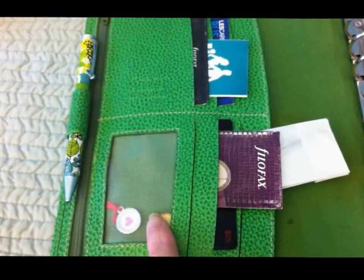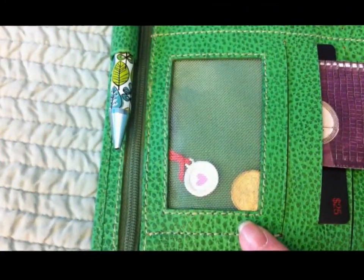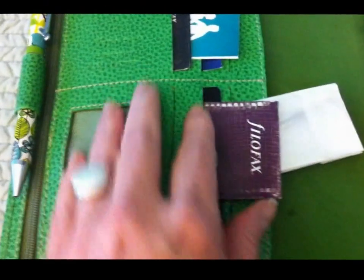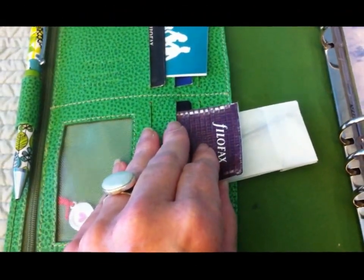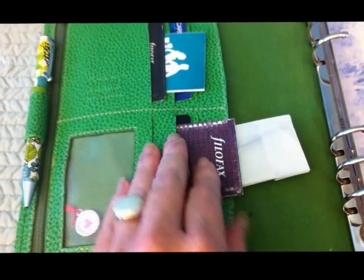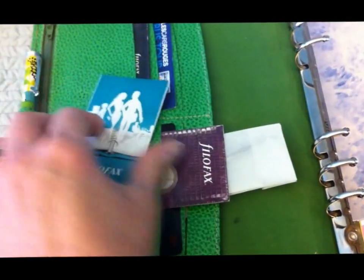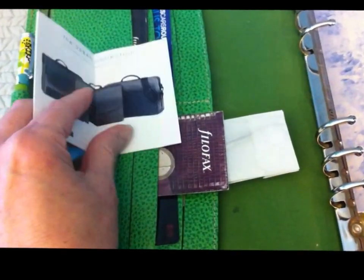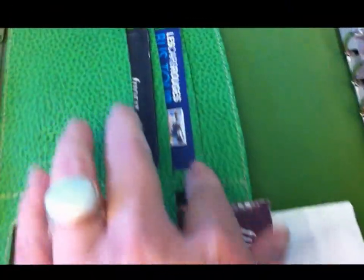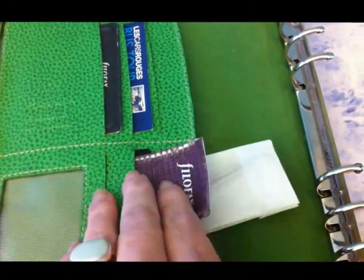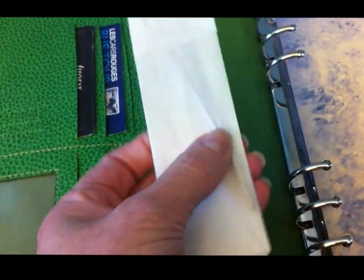There's a clear mesh pocket. I just have some European money and a charm that I found that I thought was cute. These aren't my credit cards because I don't use this as a wallet, so I have all these random Filofax things that come in the planners.